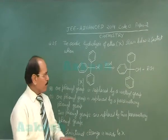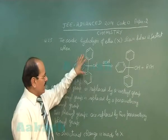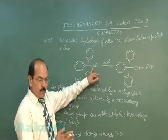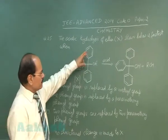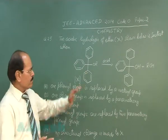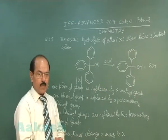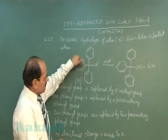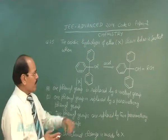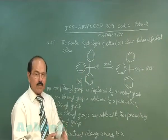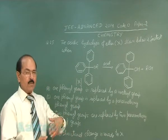Let us see how the reaction proceeds. In the presence of acid H+, at the oxygen atom of X, the alcohol leaves the place forming a carbocation to which three benzene rings are attached, and then a water molecule attacks at the carbocation forming the product. Now, if two of the phenyl groups are replaced by paramethoxy phenyl groups, the carbocation will be more stable, the energy of activation will be reduced, and the rate of reaction will be fastest.